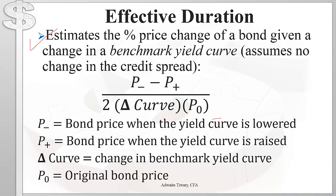Effective duration estimates the percentage change in the price of a bond given a change in a benchmark yield curve. Effective duration assumes there is no change in the credit spread. For example, if a bond gets a credit upgrade, the credit spread narrows, and the issuer might call existing bonds — but effective duration will not take that factor into account. It only looks at changes in the benchmark yield curve. Effective duration is computed using this formula.